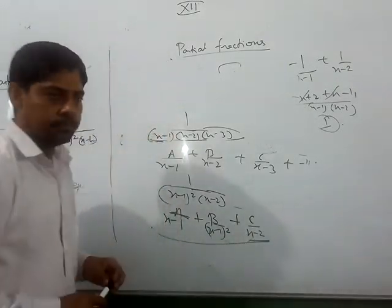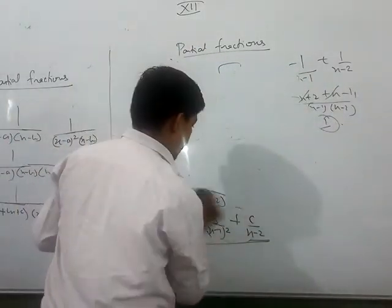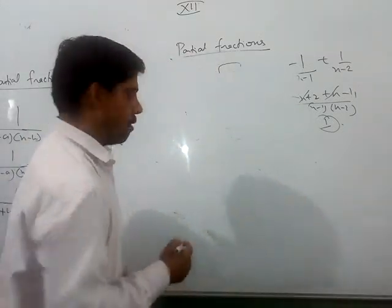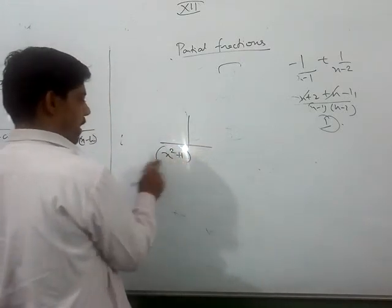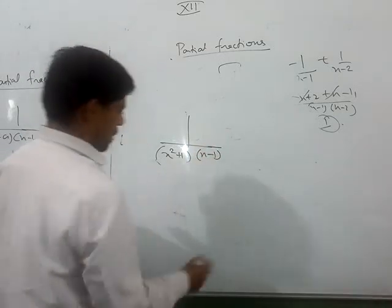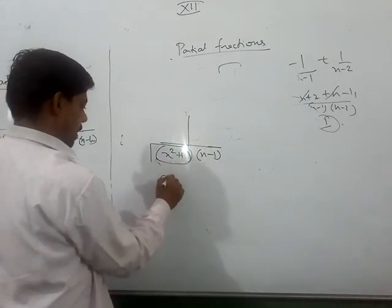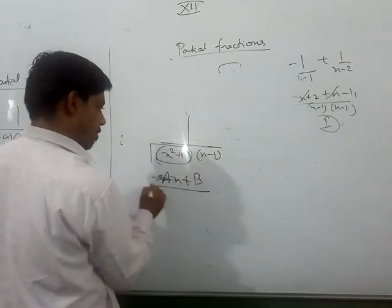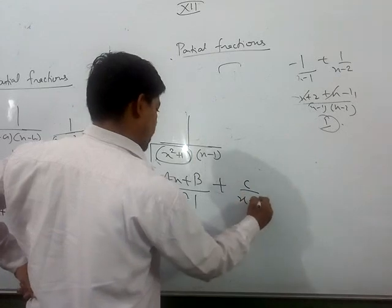And there is one more rule. If you have a quadratic factor, this will be Ax plus B upon (x squared plus 1) plus C upon x-1.